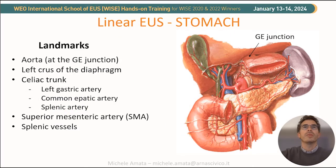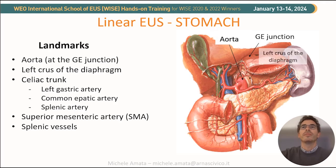The landmarks for US delineation from the stomach are the aorta, the left crus of the diaphragm, the celiac trunk and its branches, and the superior mesenteric artery and splenic vessels.